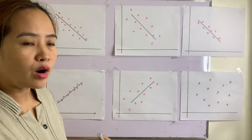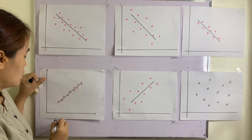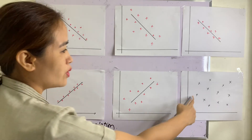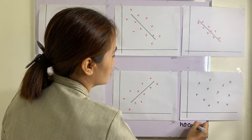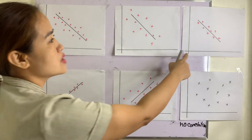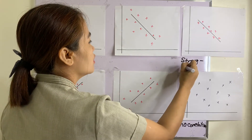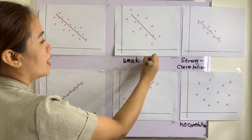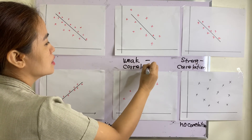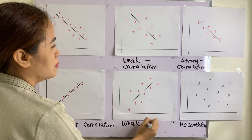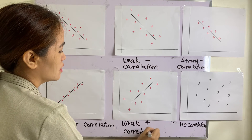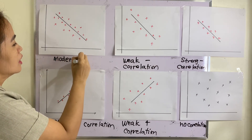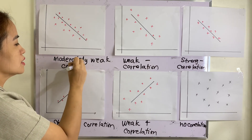Let us now identify what type of correlation each example is. This one is strong positive correlation. This one is no correlation or negligible correlation. This one is strong negative correlation. This one is weak negative correlation. This one is weak positive correlation. And this last one, I can say it is moderately weak correlation.